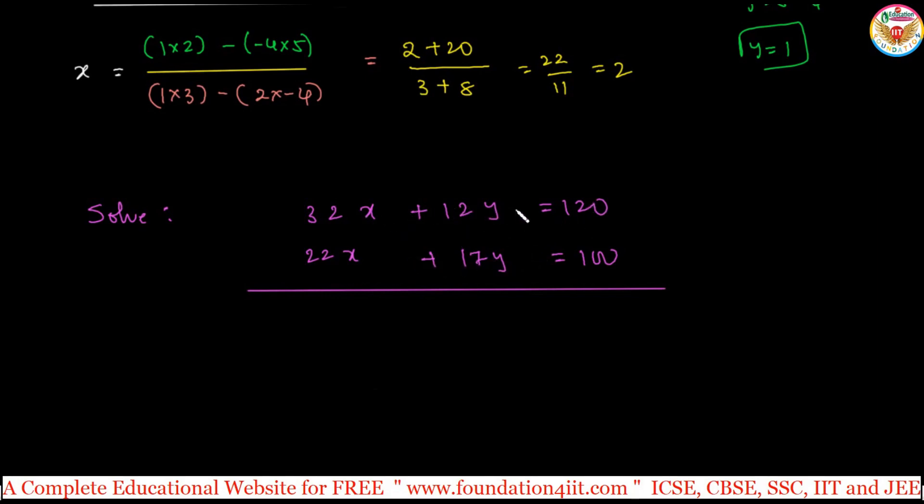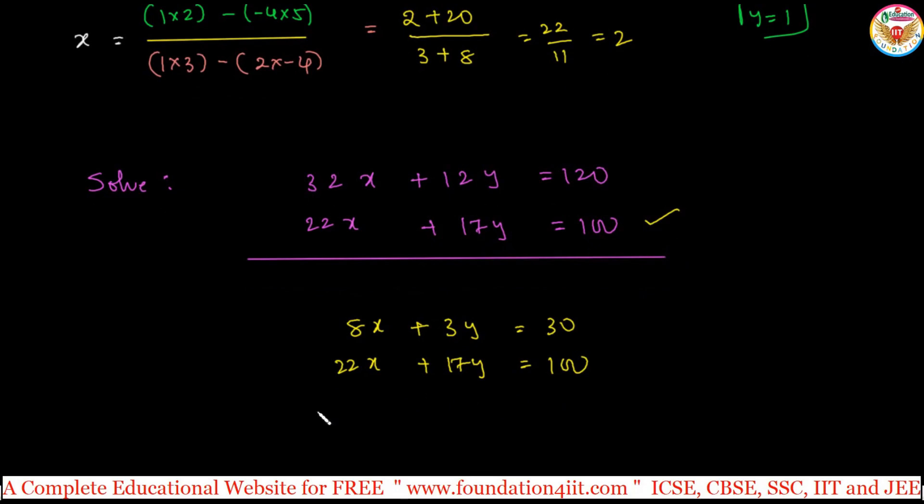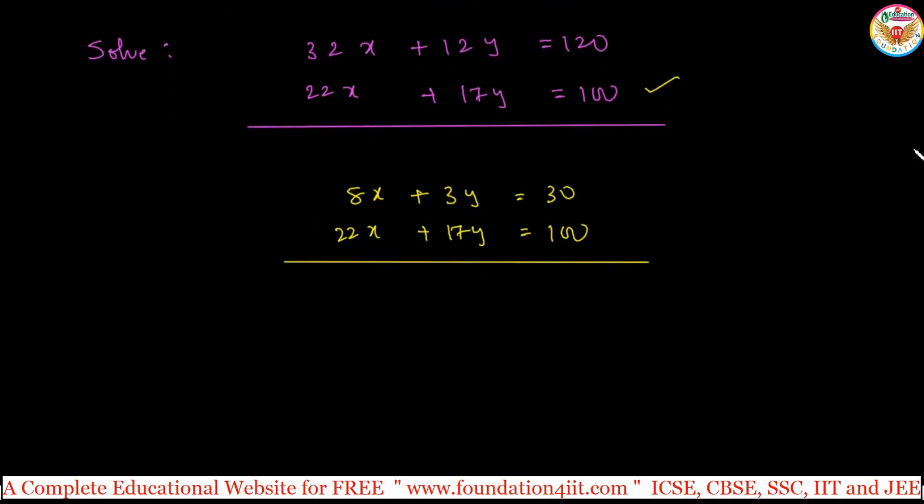4 table 12, same table all the 3 numbers, 3y, and 4 table this 120 is 30. Next one 22, 17, 100, there is no common table, same 22x plus 17y equals 100. Even if you can take this also get same answer but lengthy, because taking the bigger numbers. Now instead of solving in that, let us solve by taking these both.